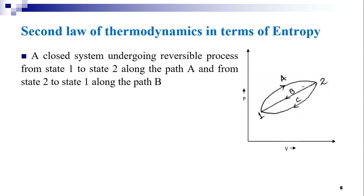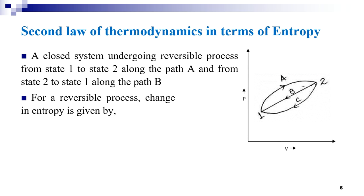Entropy is a state property or a state function of the system — it depends only on the state of the system and not on the way in which the system reaches that state. This means entropy depends only on the initial and final states of the process, and does not depend on the path of the system. Whether the process follows path 1, 2, 3, or any other path, entropy will not depend on the path. It only depends on the initial and final states. Hence it is called a state function.